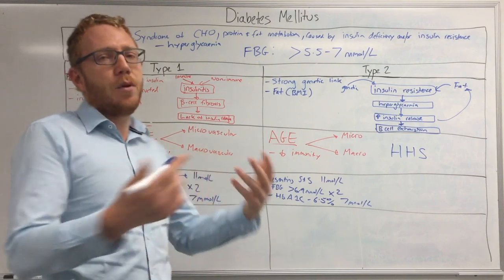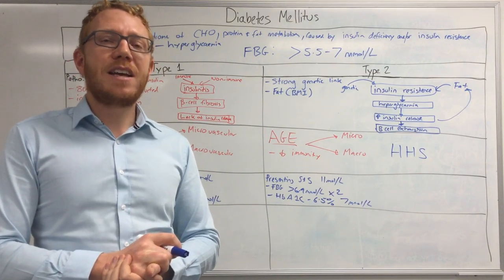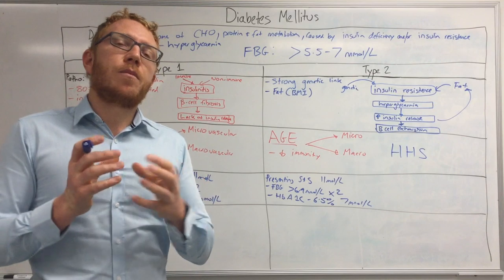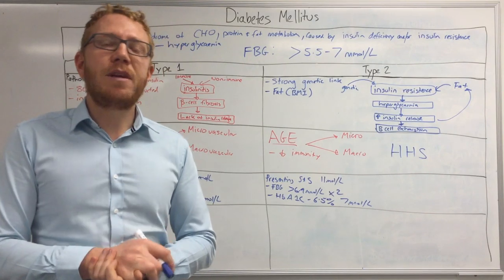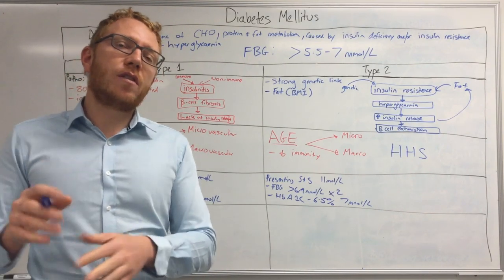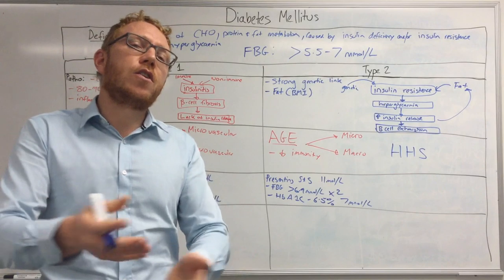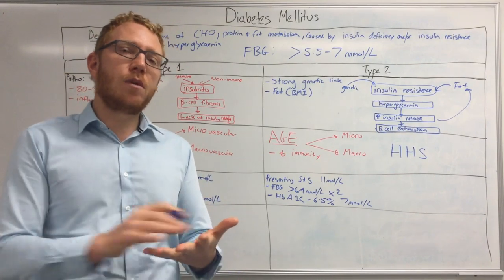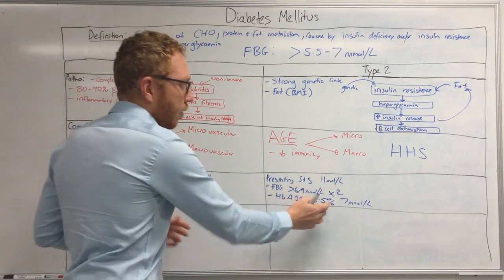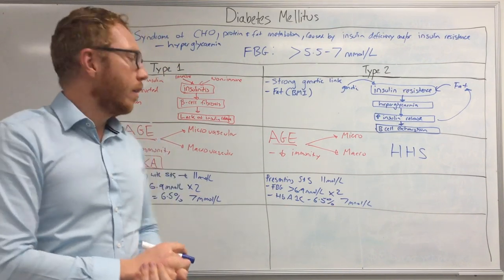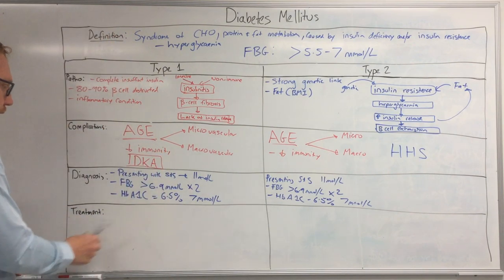Once diagnosed, patients are given tools to self-monitor at home — recording fasting blood sugar levels on waking and postprandial levels after eating. This data is brought back to the doctor to assess for spikes or good control. If the HbA1c is below 6.5%, the doctor would consider the sugar levels well controlled.